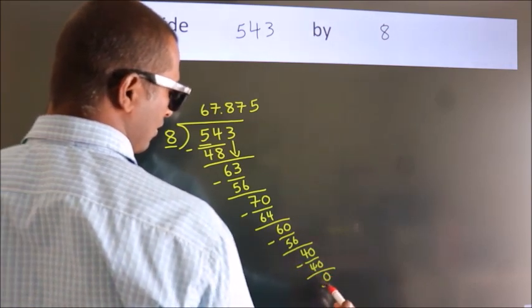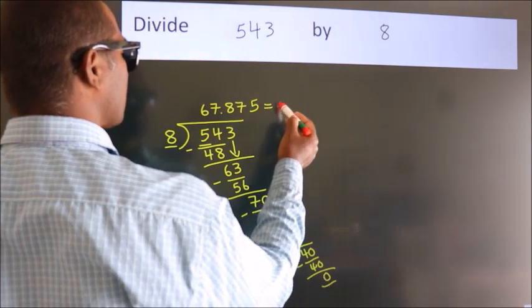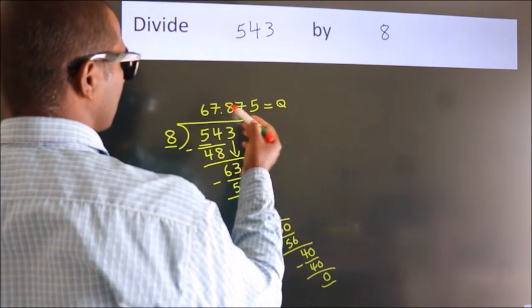Here we got remainder 0. So this is our quotient. We also take the decimal.